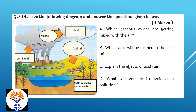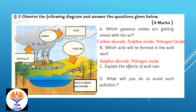Which gaseous oxides are getting mixed with the air? Which acid will be formed in acid rain? Acid rain is formed due to gases — sulfur dioxide and nitrogen oxide.